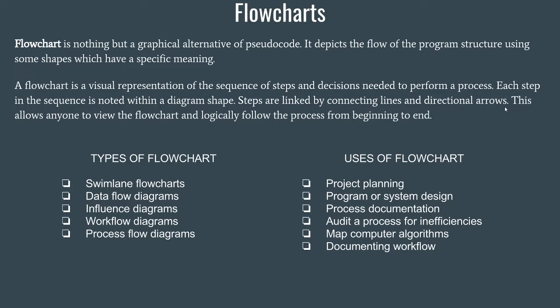Steps are linked by connecting lines and directional arrows. Whatever shapes you have made are interconnected using arrows — the arrows depict the flow and the direction that your process is moving. This allows anyone to view the flowchart and logically follow the process from beginning to end. If you have a proper flowchart for the code you are writing, anyone who looks at it can get an overview of what your code is doing. Flowcharts are a very good tool to visualize the ultimate program or piece of software you have written.